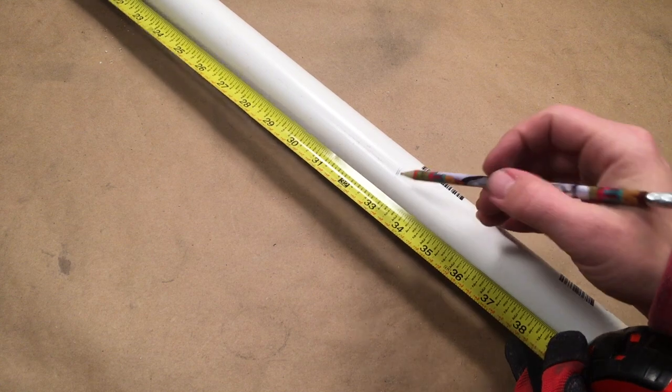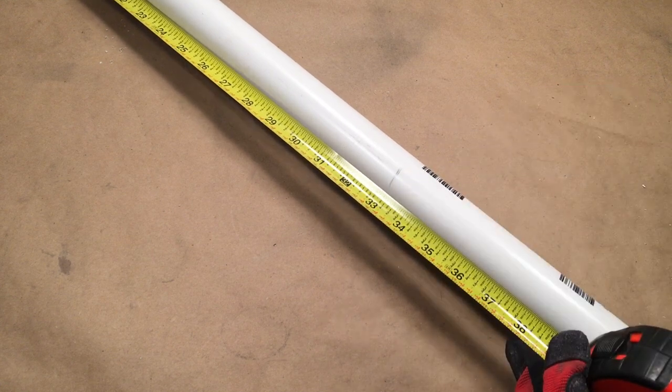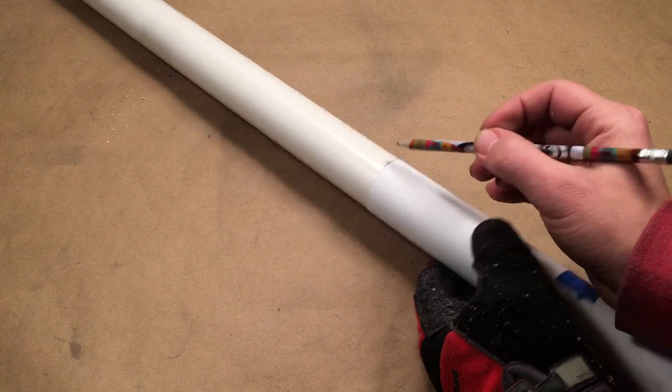Repeat this same step except cut a 22 inch piece of pipe. Next, grab the one and one quarter inch PVC pipe. Measure 33 inches down from one of the ends, mark it, and cut it with a hacksaw.